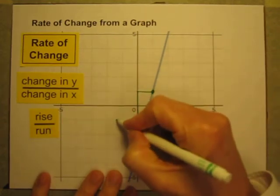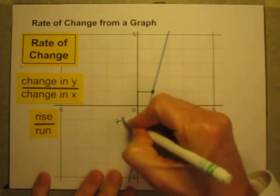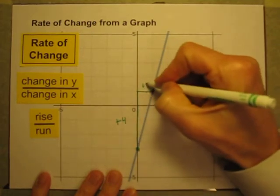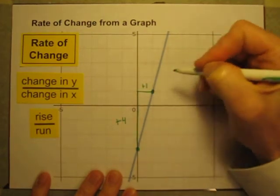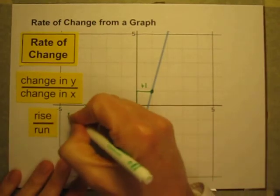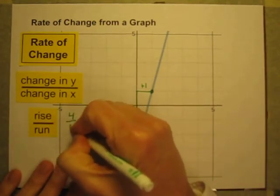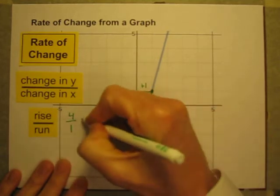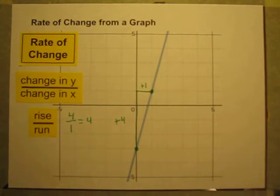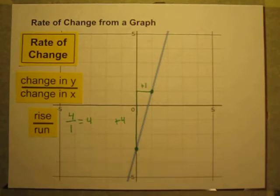On this graph for this line, it looks like I'm rising four y's and moving to the right by one x. So my rise over run — rise divided by run — is four divided by one, or just four. The steepness of this line, the slope, the rate of change of this line is four y's for every x, or just four.